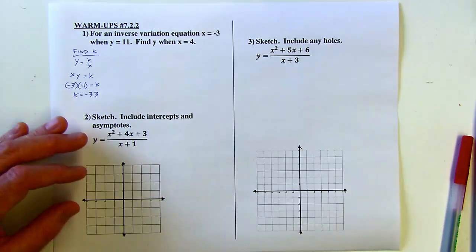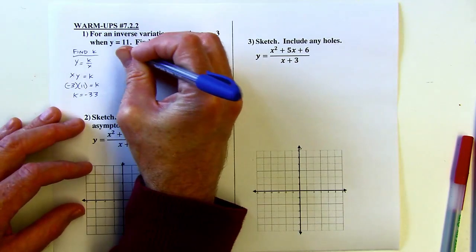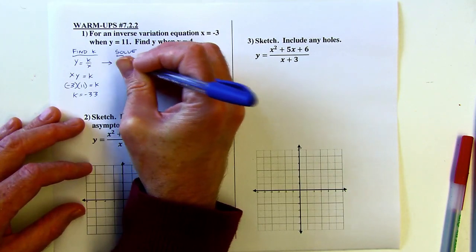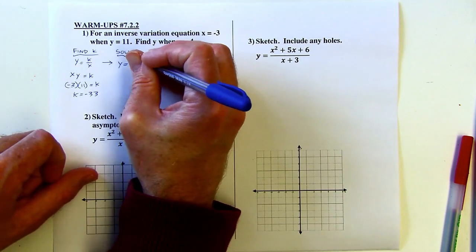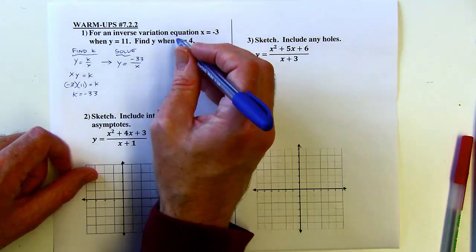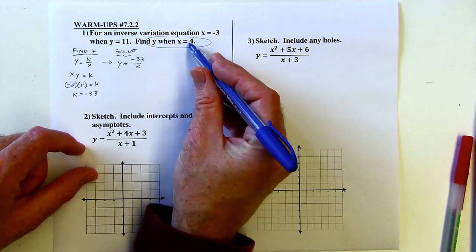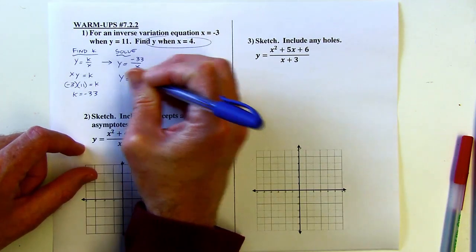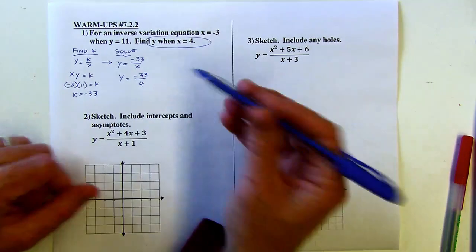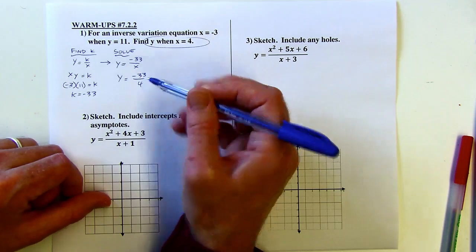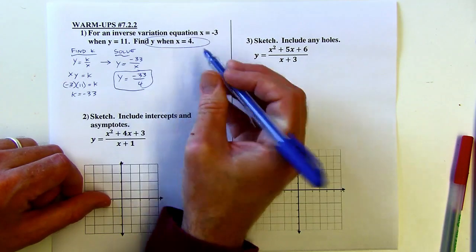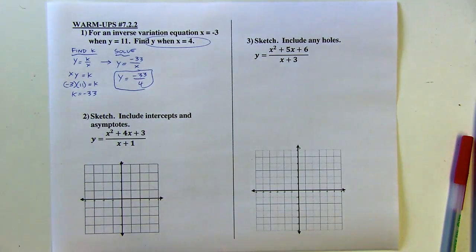Now what I'm going to do is solve this. So I'm taking this equation, and I'm going to plug the negative 33 in for k. Okay, so there's my inverse equation, and now I'm going to plug the unknown pair into that. So I'm going to put in 4 for x. I don't know what y is. Well, now I do, right? y is going to be negative 33 over 4. You could write that as a decimal if you want, but there's the y value that goes with the x value of positive 4.